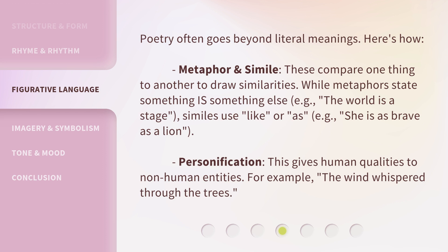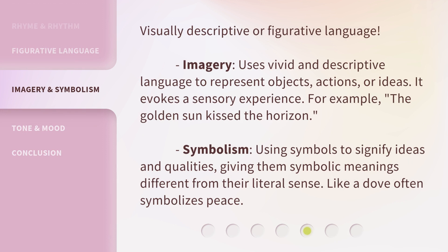Personification gives human qualities to non-human entities — for example, "the wind whispered through the trees." Imagery uses vivid and descriptive language to represent objects, actions, or ideas, evoking a sensory experience — for example, "the golden sun kissed the horizon." Symbolism uses symbols to signify ideas and qualities, giving them symbolic meanings different from their literal sense — like a dove, which often symbolizes peace.